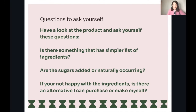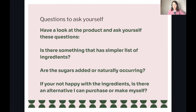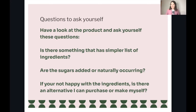Are the sugars added or naturally occurring? In the nut bar example, one product had added sugar listed in black and white, while the other had organic honey — a naturally occurring sugar. If you're not happy with the ingredients, is there an alternative you can purchase? Have a look at different options. There are plenty at the supermarket, and the health section often has alternatives, though not all of them are great.